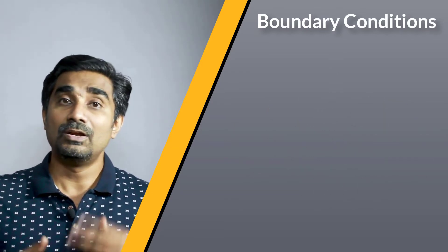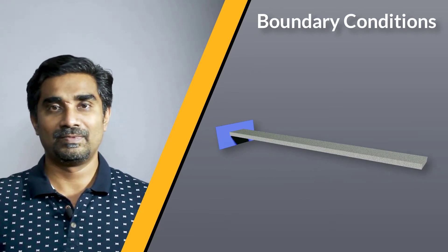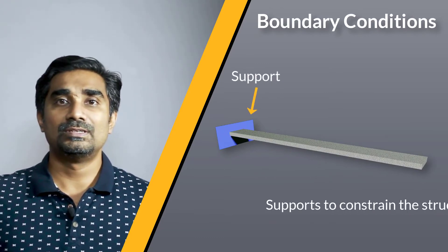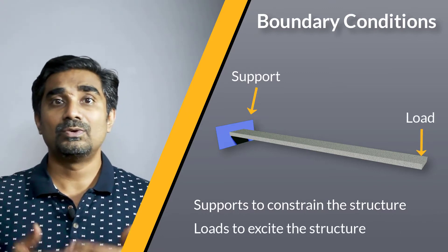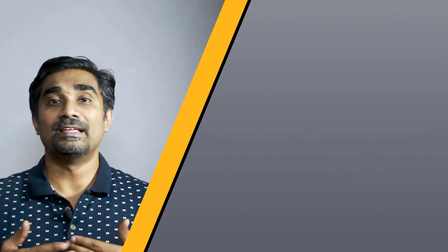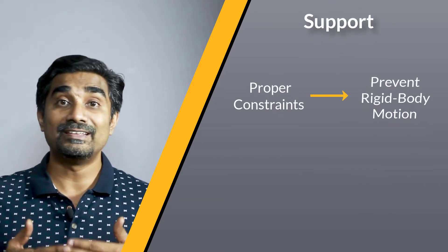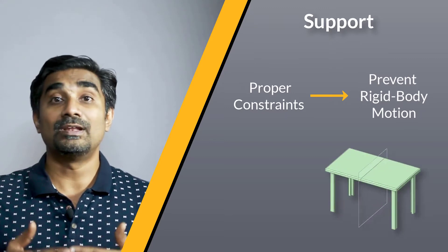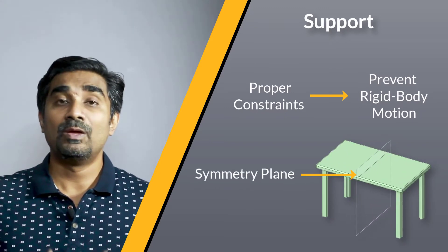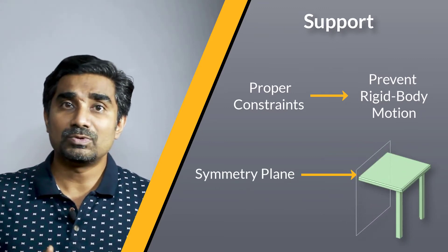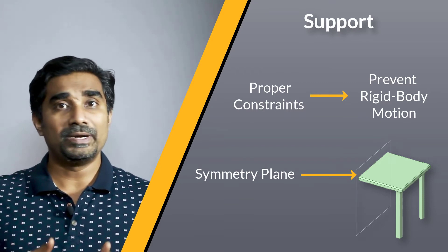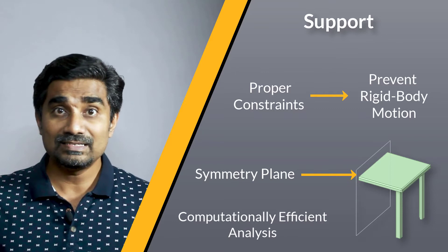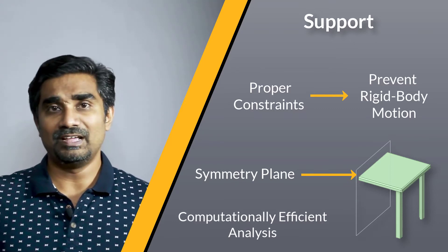We can consider two types of boundary conditions. Supports are used to constrain the structure while loads are used to excite the structure. In static analysis, we need to properly constrain our model to prevent rigid body motion. Utilizing planes of symmetry when applicable makes this process easier, as certain rigid body modes are automatically suppressed, and the analysis becomes more computationally efficient too.